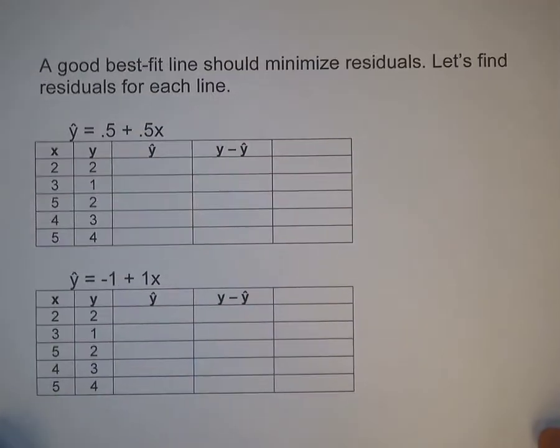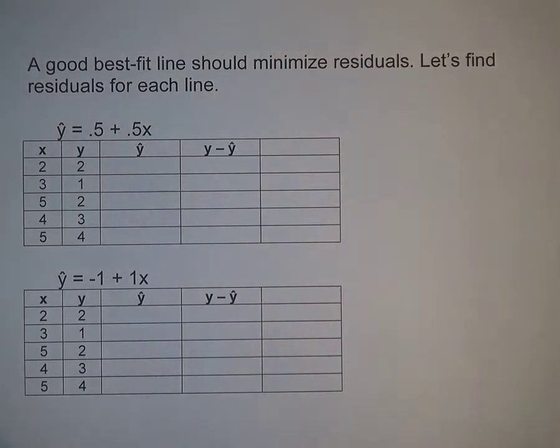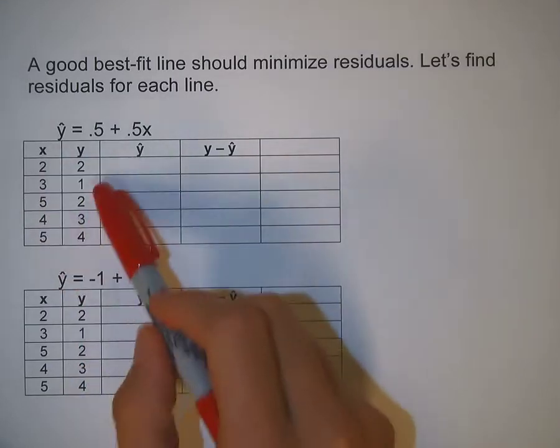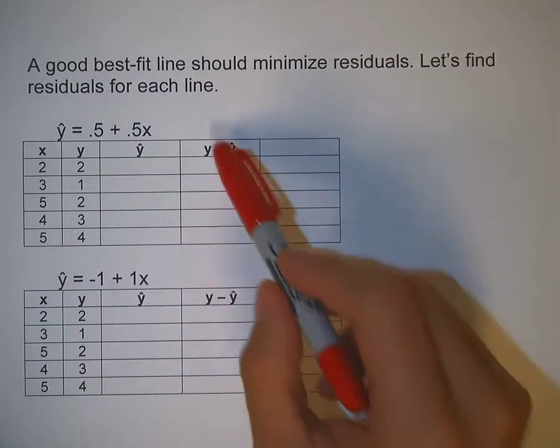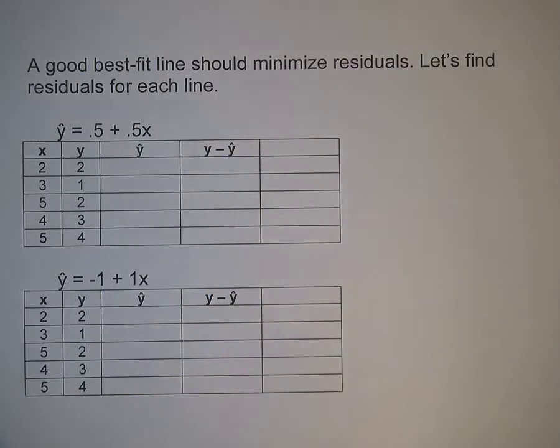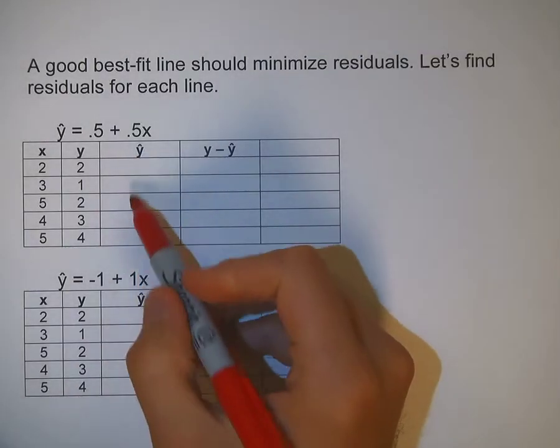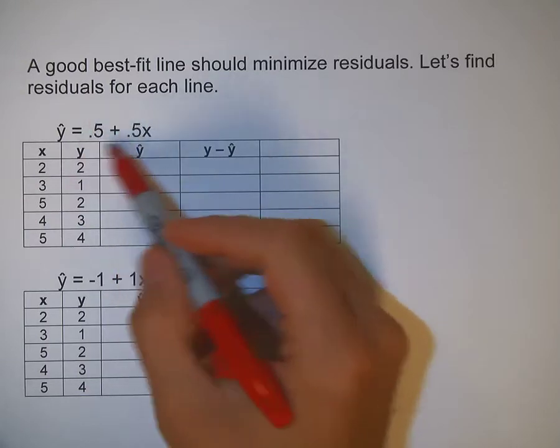A good best fit line should minimize residuals. Let's find the residuals for each line. I have a table with all the points. I have a column for the y-hat values and a column for the residuals. The first thing I want to do is determine my y-hat values. I'll take my x values and plug them into this y-hat equation.